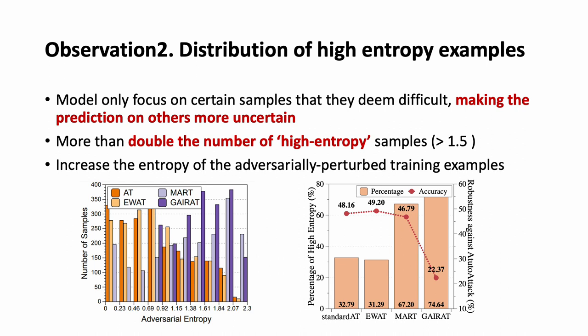To quantify the features of each sample, we also analyzed the distribution of high-entropy samples. We found that previous reweighting methods have a relatively high number of high-entropy examples, as shown in the bar graph. The purple-tone bar represents the distribution of entropy of reweighting methods, MART and GEHR, and the orange bar represents the standard adversarial training methods.